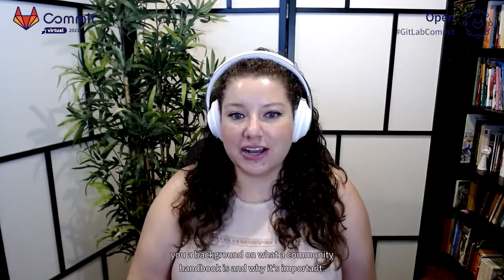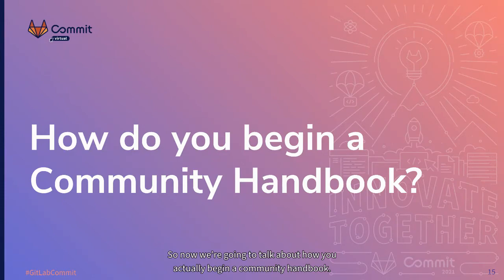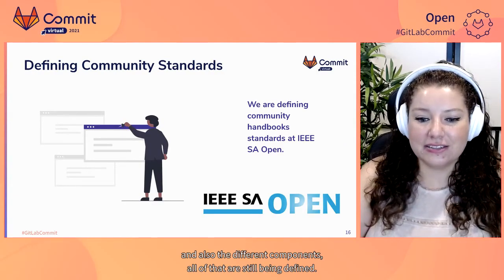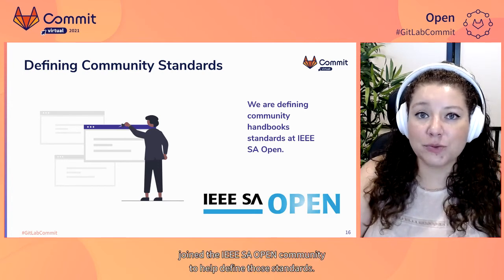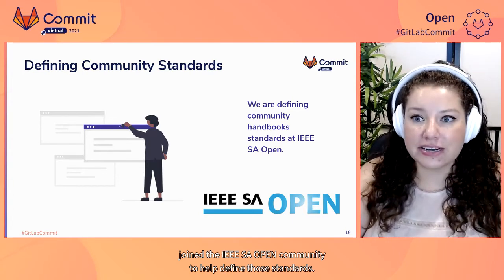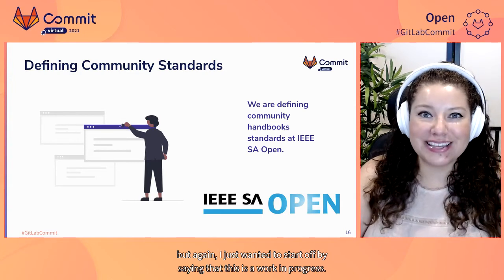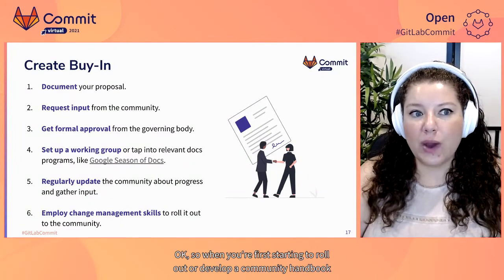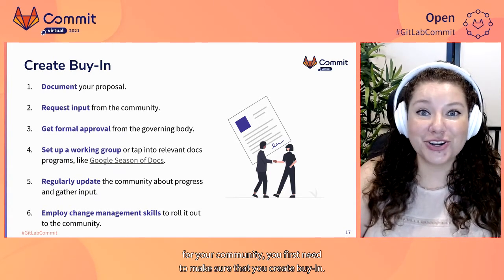Hopefully we've now given you a background on what a community handbook is and why it's important. Now we're going to talk about how you actually begin one. It's worth noting that this is all still in flux — the term community handbook and its different components are still being defined. Jaskerat and I have joined the IEEE SA Open community to help define those standards. We encourage you to join us, and I'll have information about that at the end.